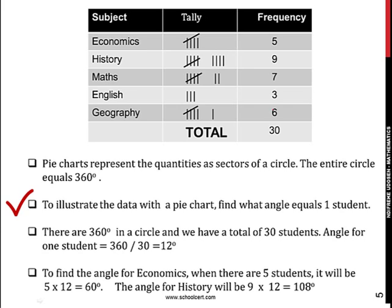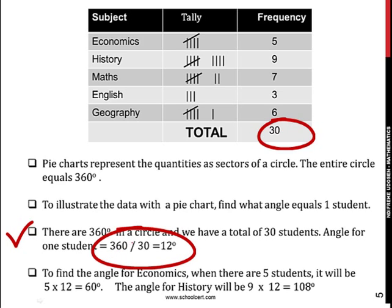So to illustrate the data with a pie chart, we find out what angle equals one student. There are 360 degrees in a circle, and we have a total of 30 students. The angle for one student, therefore, will be 360 divided by 30, which is 12.